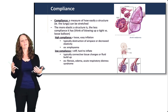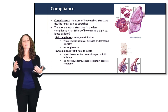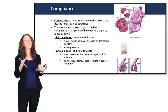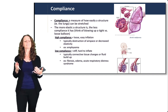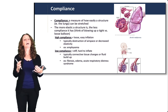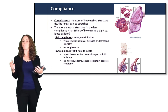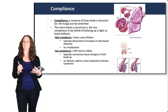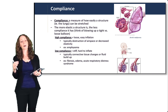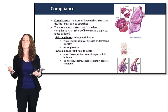An example of a highly compliant lung — too much compliance — would be emphysema, where destruction of airspace leads to decreased elasticity and overinflated lungs. An example of low compliance would be pulmonary fibrosis, where buildup of scar tissue stiffens the lungs, making them very hard to inflate, leading to underinflated lungs. This principle of compliance is very important as you learn about obstructive, restrictive, and related respiratory conditions.